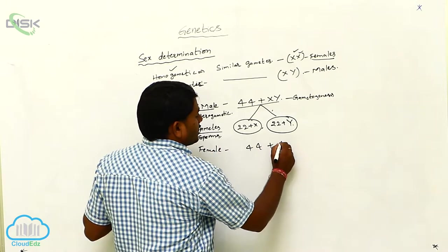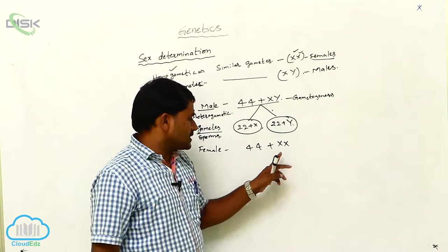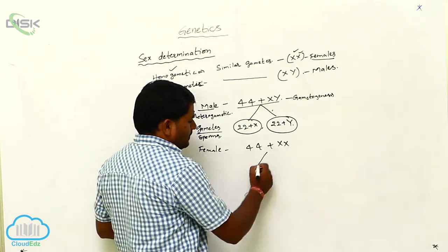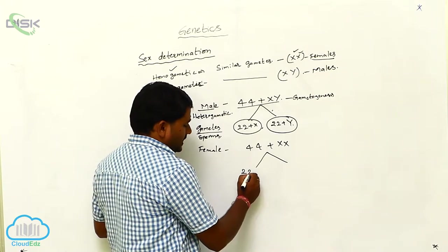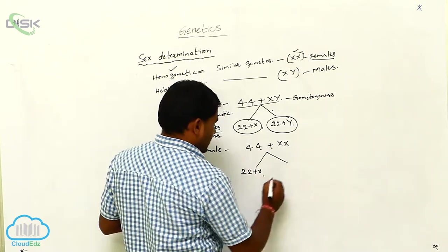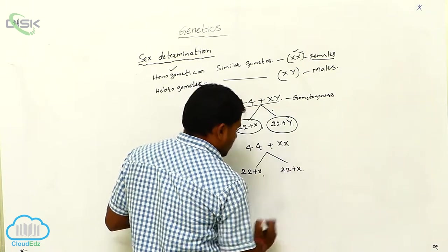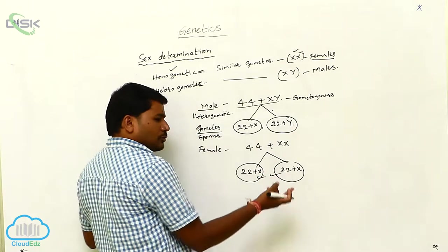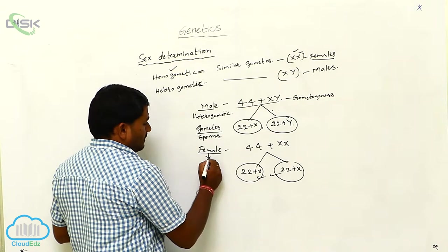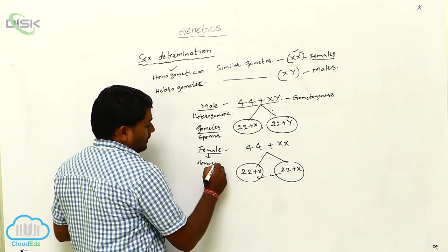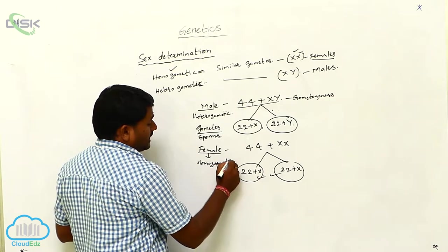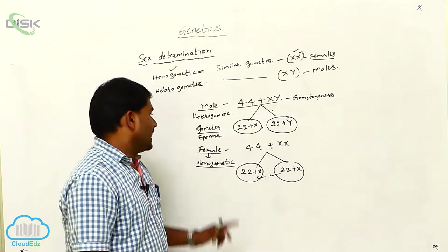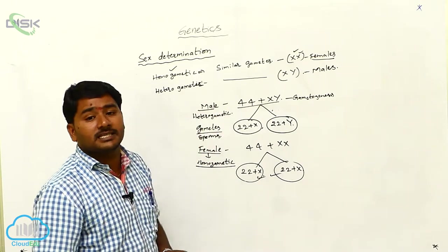Now, what is the karyotype of the female? It is 44 plus XX. The sex chromosomes present in the female human being are both X chromosomes — X and X. Females produce gametes of only one type: 22 plus X. All the gametes are similar, so the female is called homogametic.